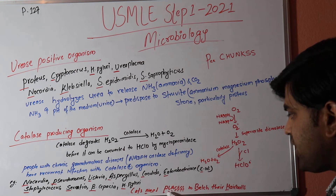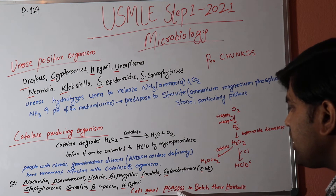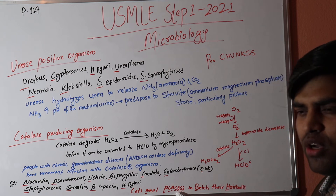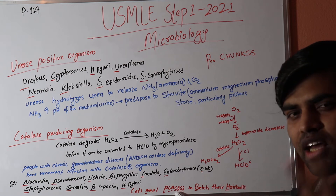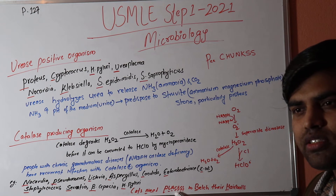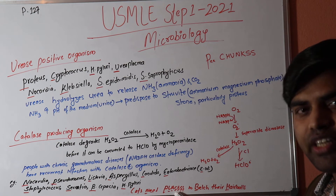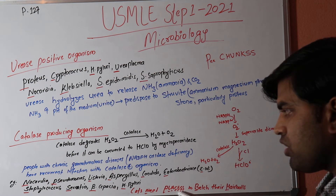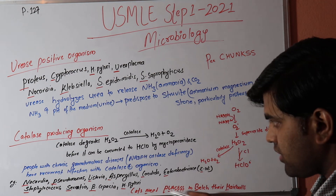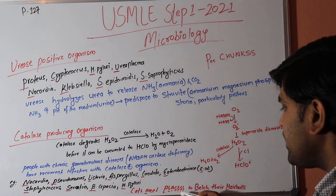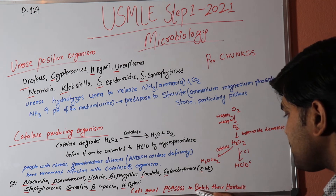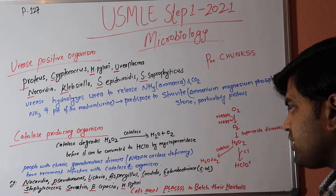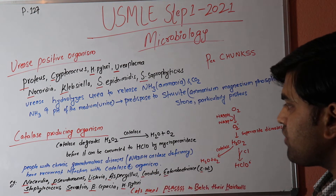These organisms can be remembered with the mnemonic 'CATS': C for Catalase-positive, and then Nocardia, Pseudomonas, Listeria, Aspergillus, Candida, Enterobacteriaceae (including E. coli, Klebsiella, Enterobacter, Citrobacter), Staphylococcus, Serratia, Burkholderia cepacia, and H. pylori. These all cause repeated infections in chronic granulomatous disease patients.